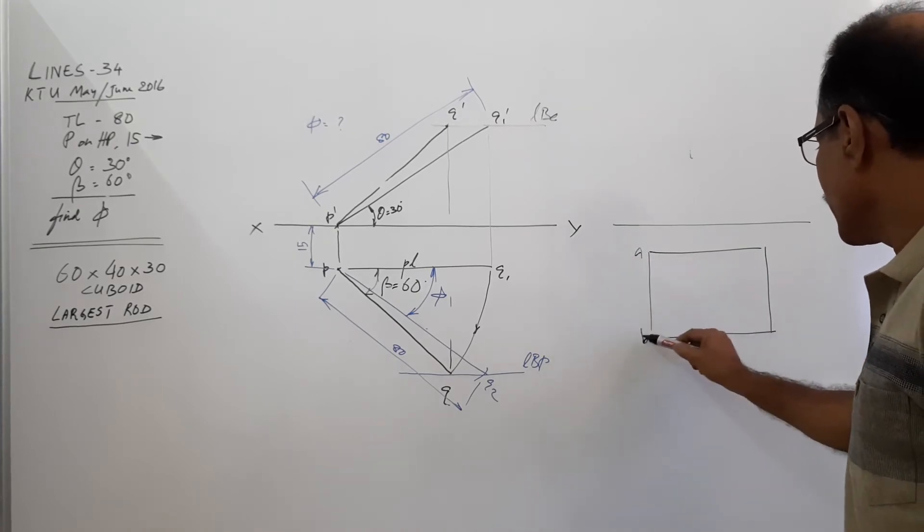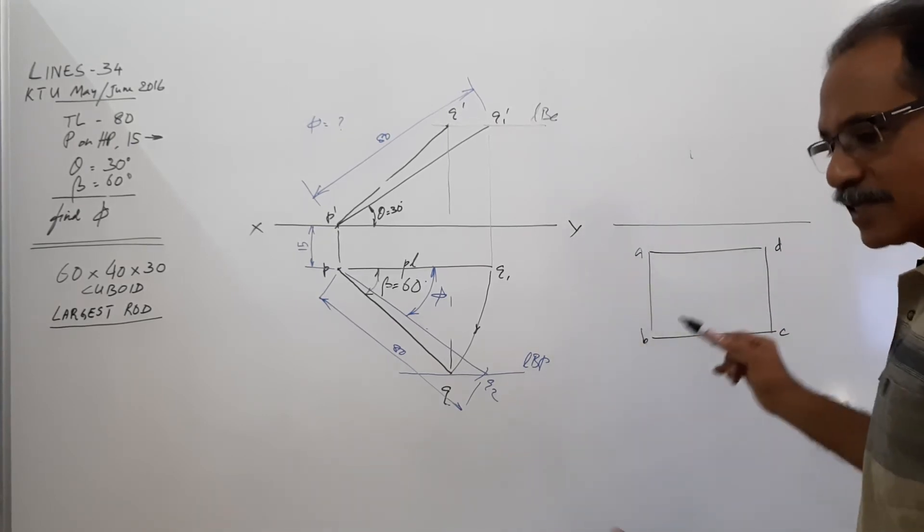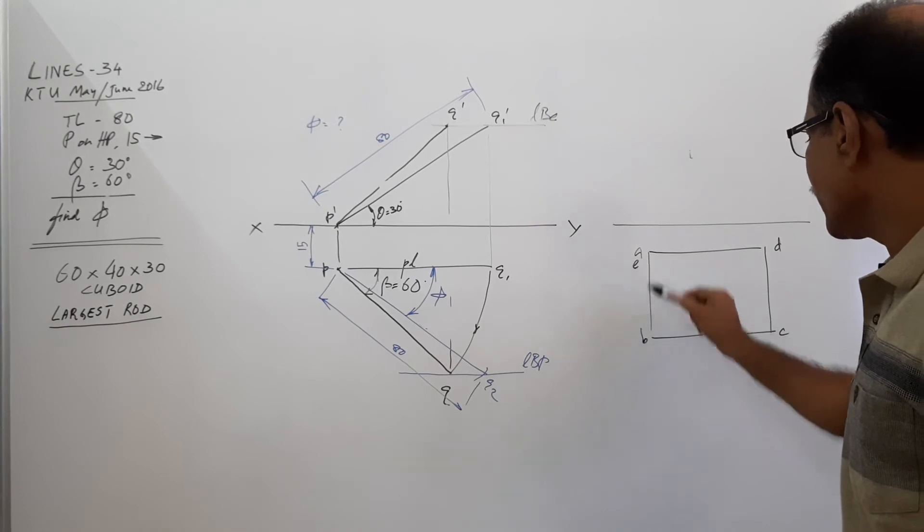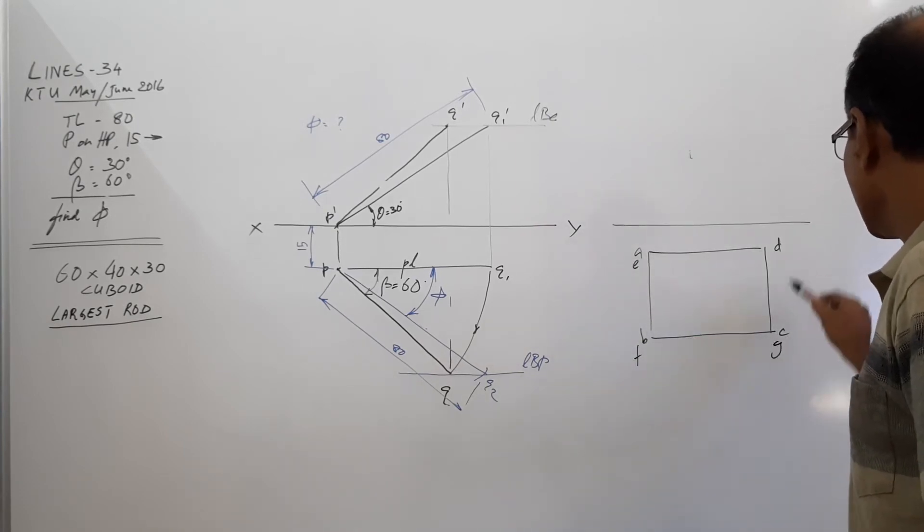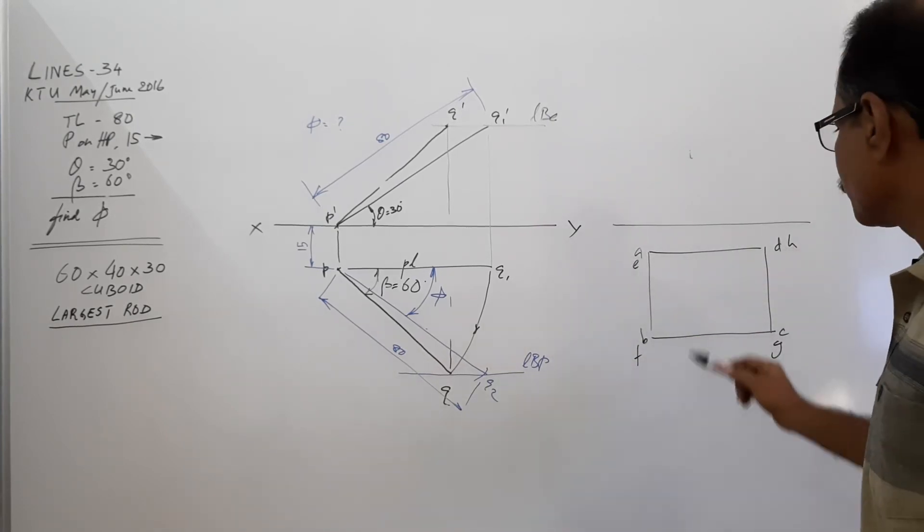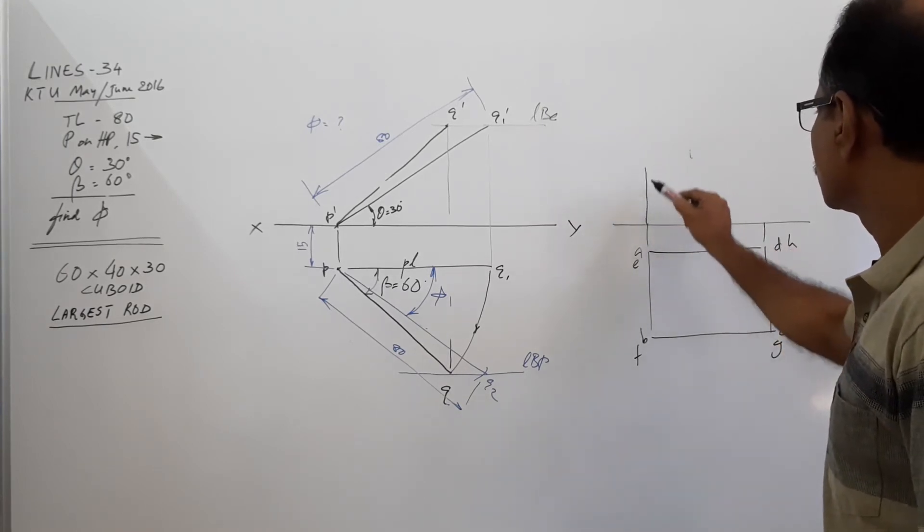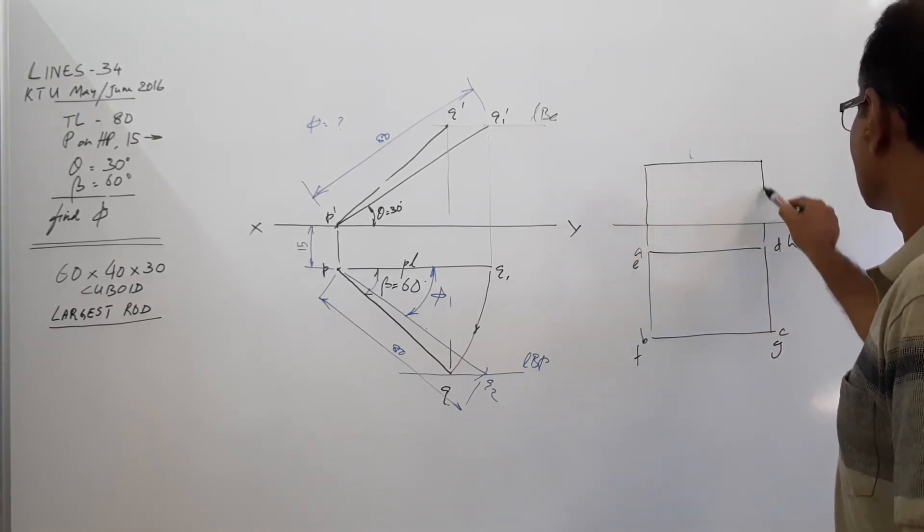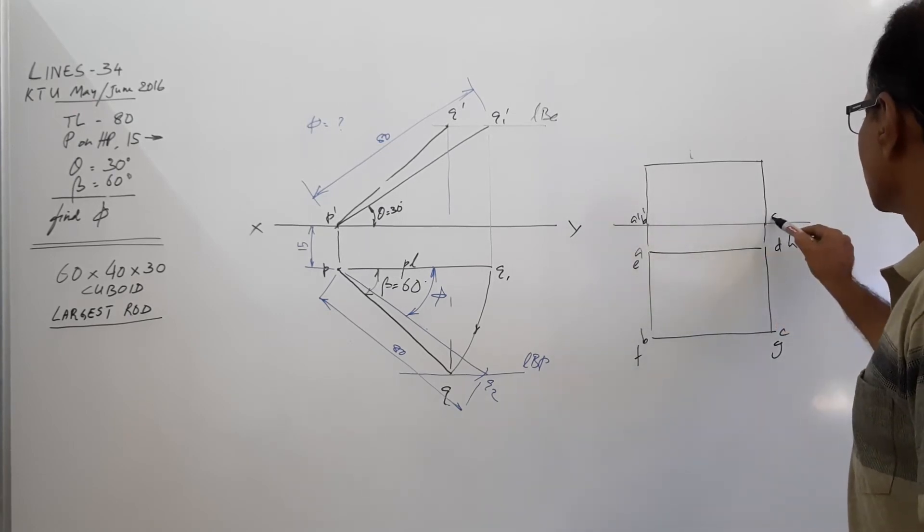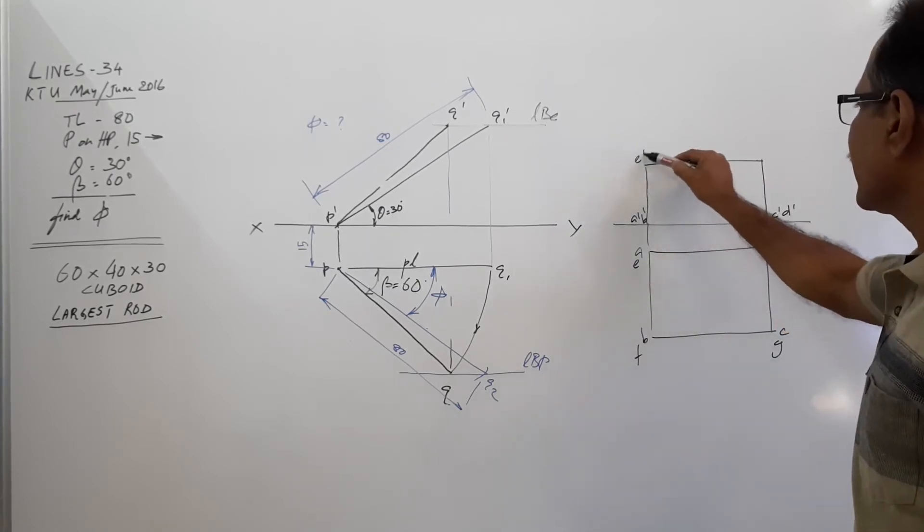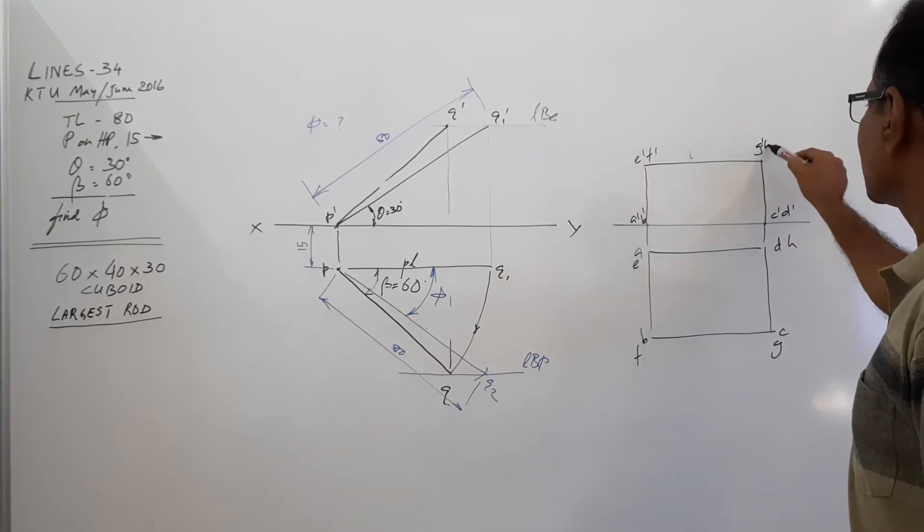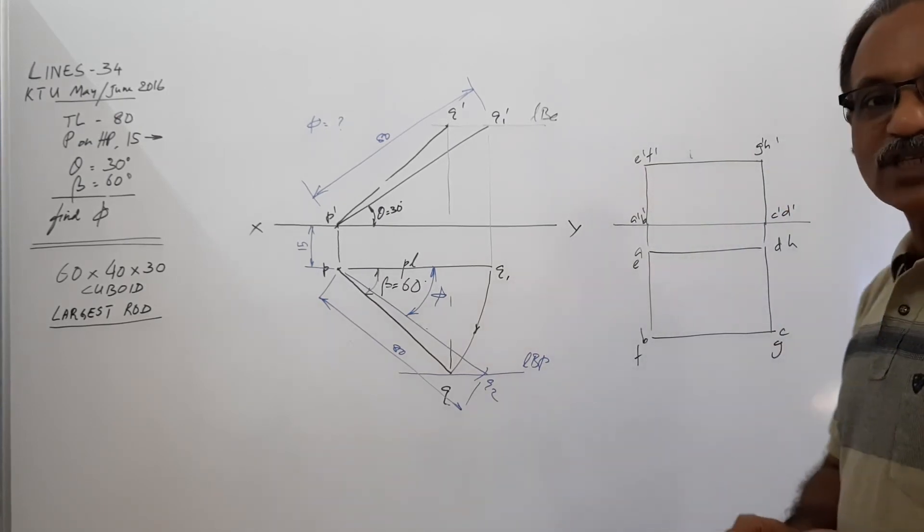A, B, C, D, the bottom corners. E, F, G, H, the top corners. A dash, B dash, C dash, D dash, E dash, F dash, G dash, H dash. Plan and elevation of the box.